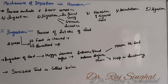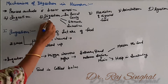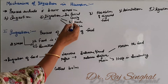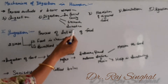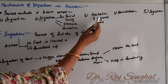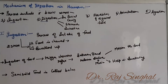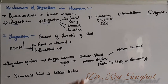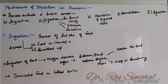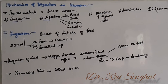The steps of nutrition include ingestion, digestion which occurs in buccal cavity, stomach and intestine. After digestion, the digested food is absorbed in the intestine. Then the next step is assimilation and egestion. We will study these steps one by one.